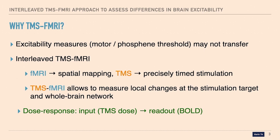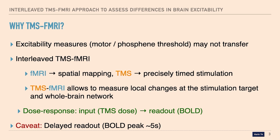The advantage of interleaved TMS-fMRI is based on two factors: the high spatial mapping capabilities of fMRI and TMS's ability to precisely time the stimulation. The combined TMS-fMRI approach allows us to measure local changes at the stimulation site and also at the whole brain network level. To obtain dose-response relationships, the basic principle is to change the TMS dosage input, do repeated runs of EPI acquisitions, adjust the dose or other parameters, and then derive those response curves.